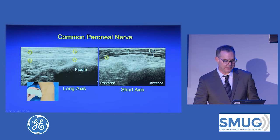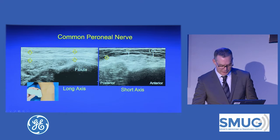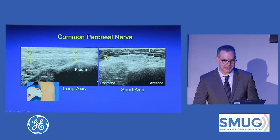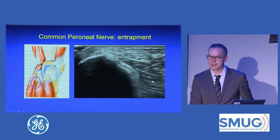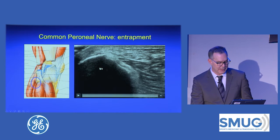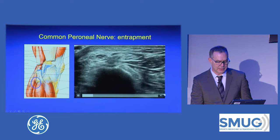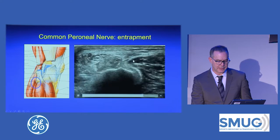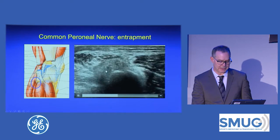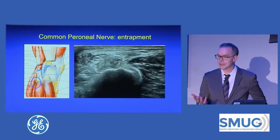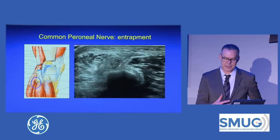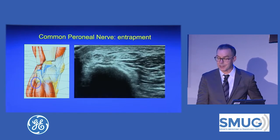Here we can see the normal nerve. In long axis it looks like a fascial plane — almost like a tendon — but that's the normal nerve. In short axis you see more of a honeycomb appearance, with the nerve directly posterior to the biceps femoris. Here's a case of entrapment: a golfer who started developing foot drop. The nerve gets larger and more edematous as it goes through the enclosed space under the peroneus longus. Whenever you see an enlarged nerve, if you push on it with the transducer it elicits symptoms — another indirect finding supporting the abnormality.